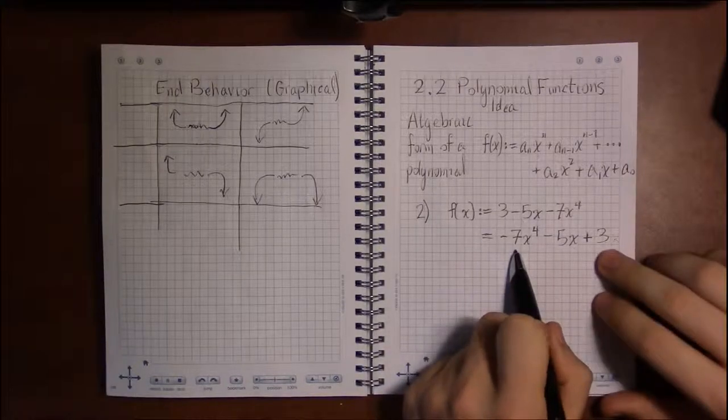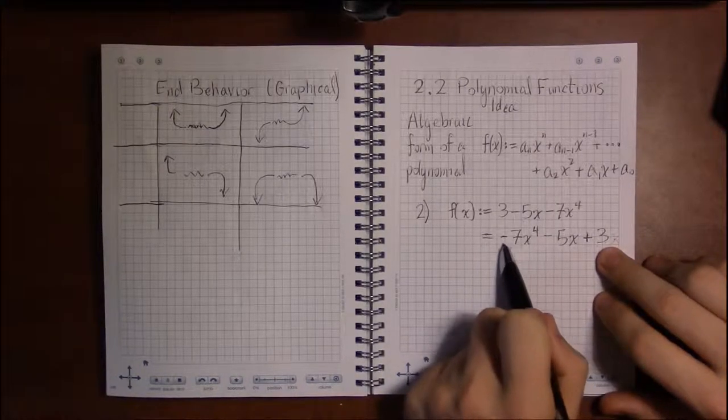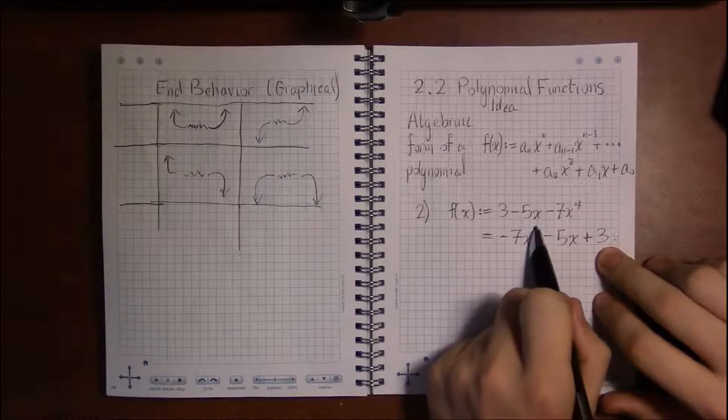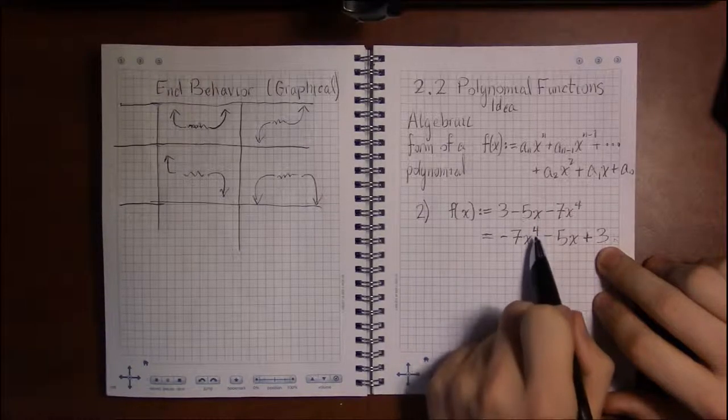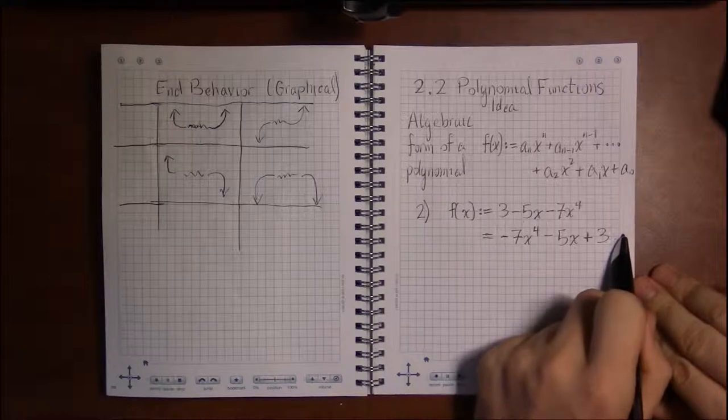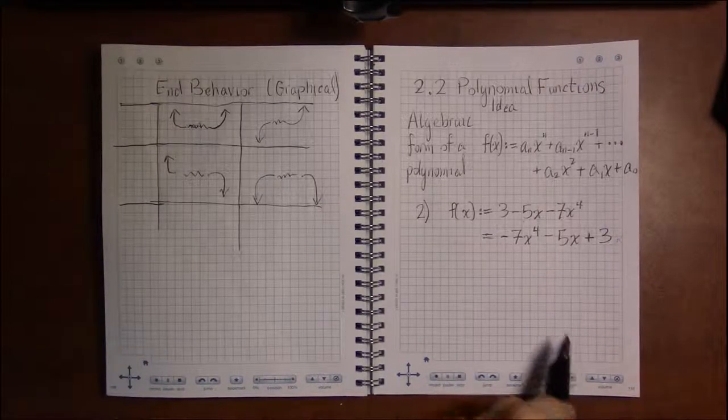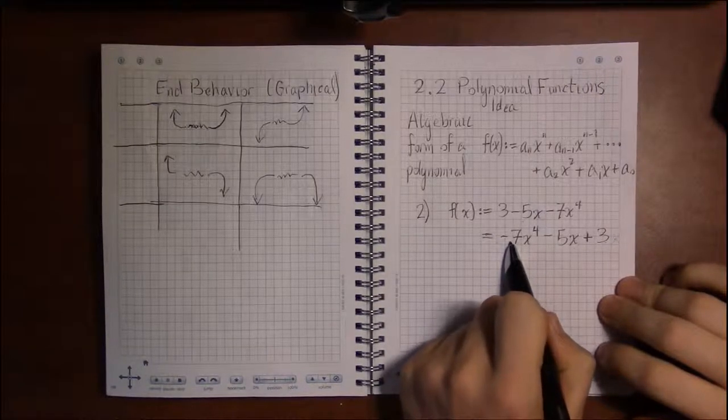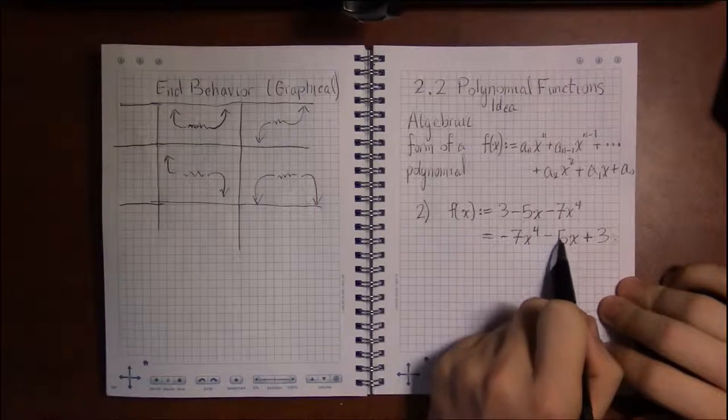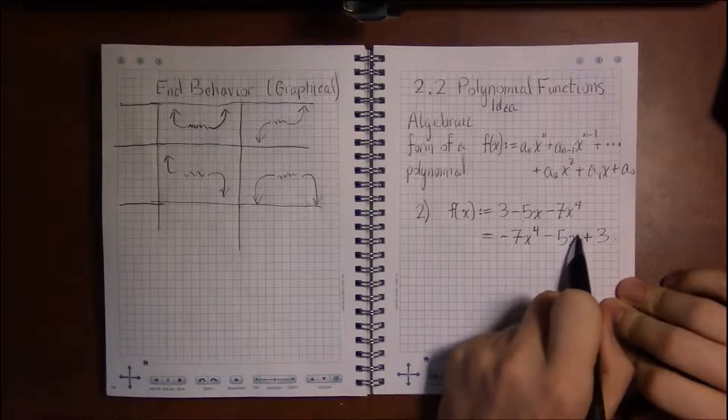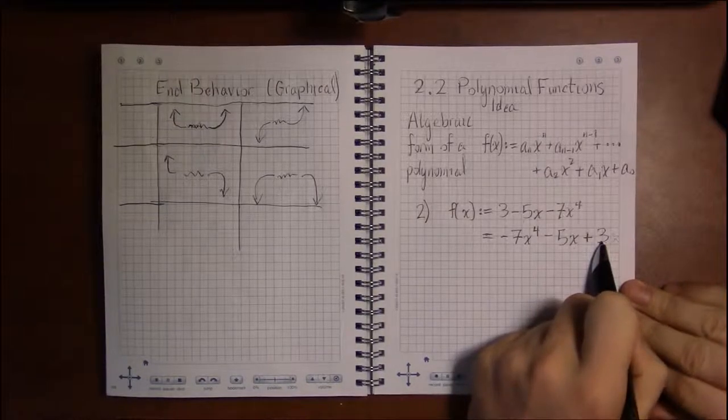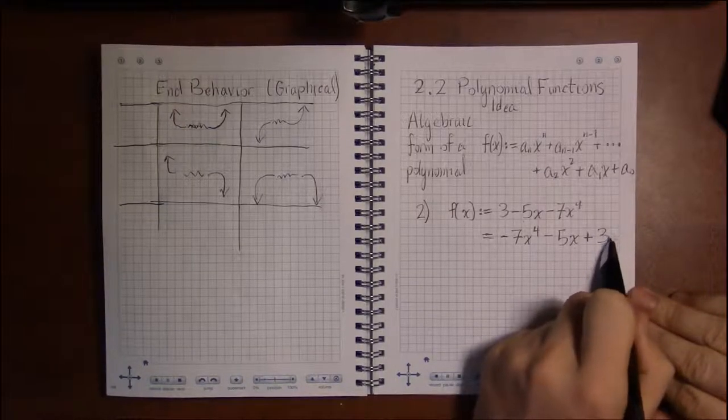This is what polynomials look like: they are numbers times x to positive, or rather non-negative, integer powers, because we can have x to the zero. So we've got -7 times x⁴, -5 (a number times x to the first positive power), plus 3 (a number times x⁰, x to a non-negative power).